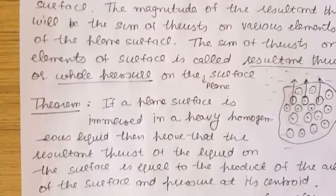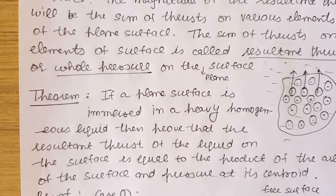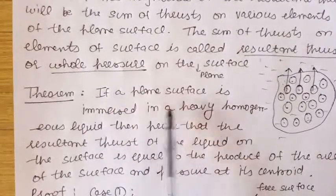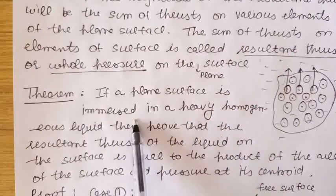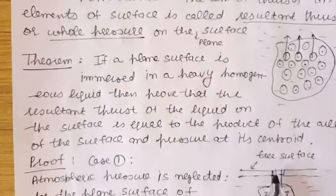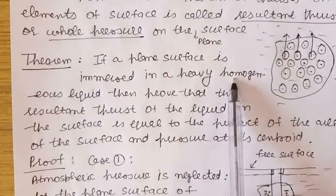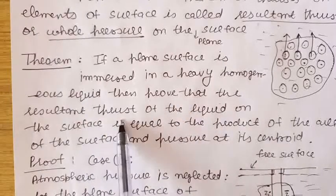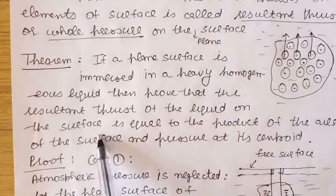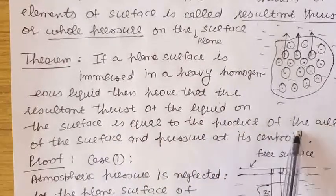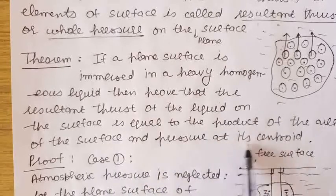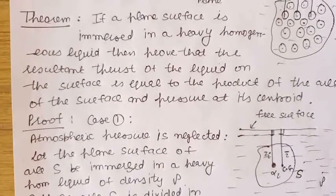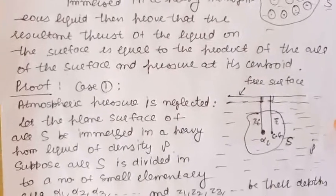Next there is a theorem for the resultant thrust on a given plane surface. If a plane surface is immersed in a heavy homogeneous liquid — homogeneous liquid means which has the same density throughout — then we have to prove that the resultant thrust of the liquid on the surface is equal to the product of the area of the surface and the pressure at its centroid. In order to prove this, first of all let us consider the case when the atmospheric pressure is neglected.